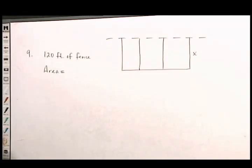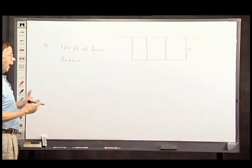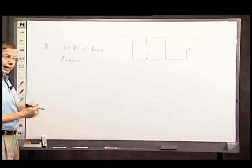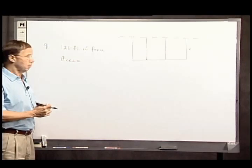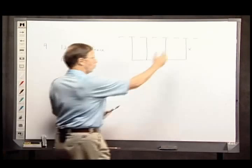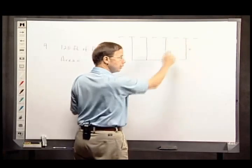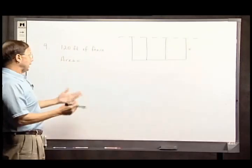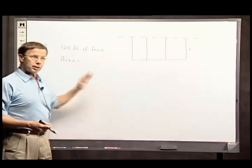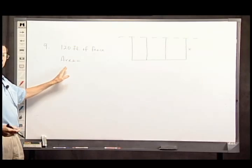Well here's like any word problem, you have to bring certain knowledge to the problem. I know that the area of a rectangle is the length times the width. If the width of this rectangle is x, all I need to know is what the length is to establish what the area is.